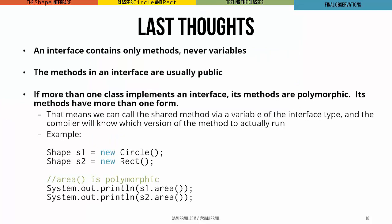So a few final thoughts. An interface only has methods, it doesn't have variables, that's crucial. We typically make all the methods in an interface public. So helper methods we'll typically leave out of an interface. And if we have more than one class implementing an interface, which is typically the case, we'll say that its methods are polymorphic. Those methods, the ones being implemented by multiple different classes, they have different forms.